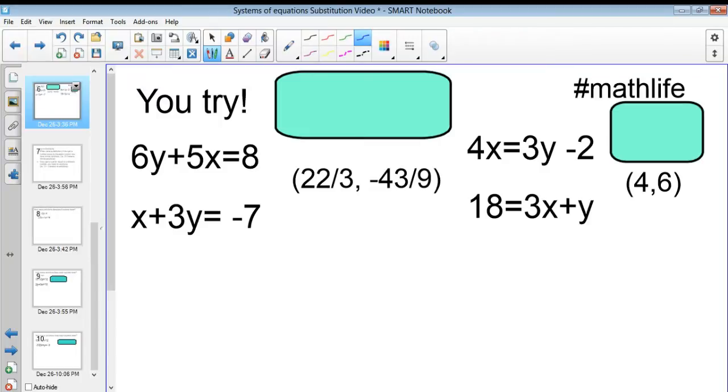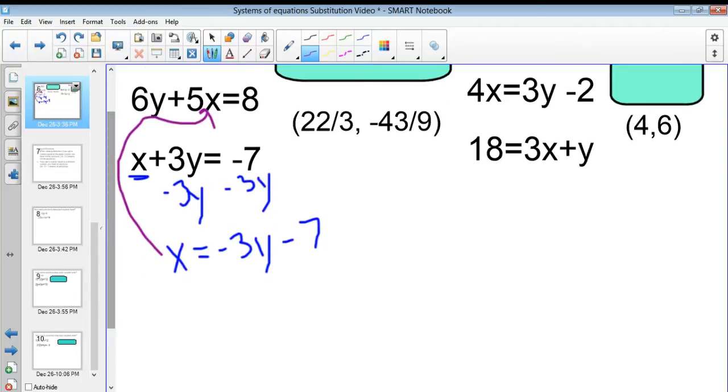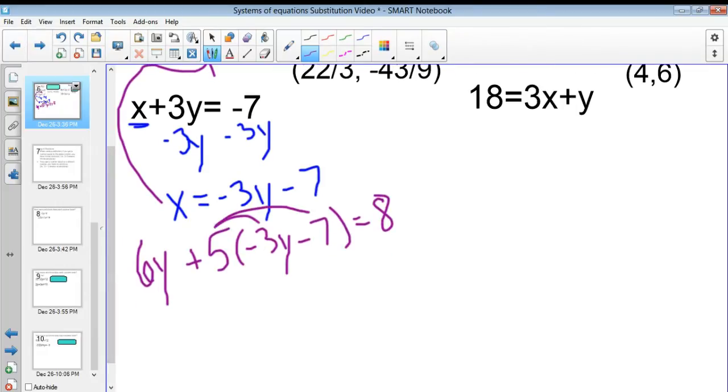So, starting off with this first one, looking at this system of equations, I instantly know I want to solve for x because I have one x there. So, I'm going to subtract 3y from both sides and that's going to give me x equals negative 3y minus 7. Now, remember, children, that we do not want to substitute this equation into the same equation we just got. You're going to get negative 7 equals negative 7. Good job, you did it horribly. That's not math. So, let's do some math and let's plug it into that other equation. So, we're going to plug it in right there. So, that's going to give us 6y plus 5 times negative 3y minus 7 equals 8. And then I distribute the 5 to everything inside, which gives me 6y minus 15y minus 35 equals 8.